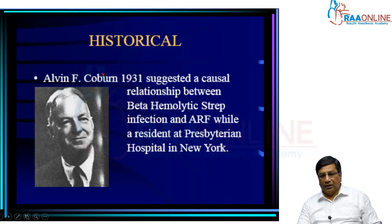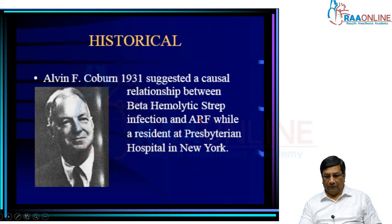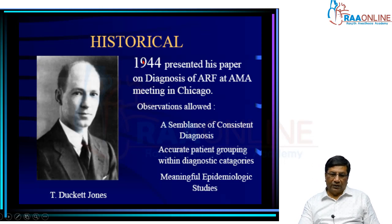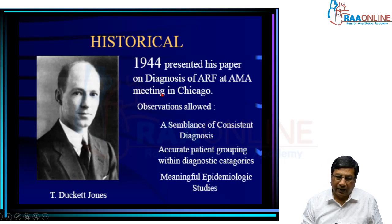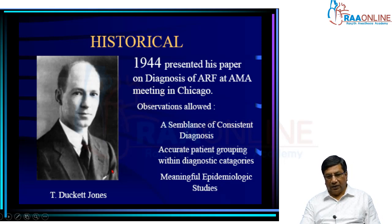Alvin F. Coburn in 1931 suggested that the beta-hemolytic streptococcus is the reason for pharyngitis as well as acute rheumatic fever. Then 1944 is a very important year, where Duckett Jones developed the diagnostic criteria for diagnosing rheumatic fever, called the Jones criteria.